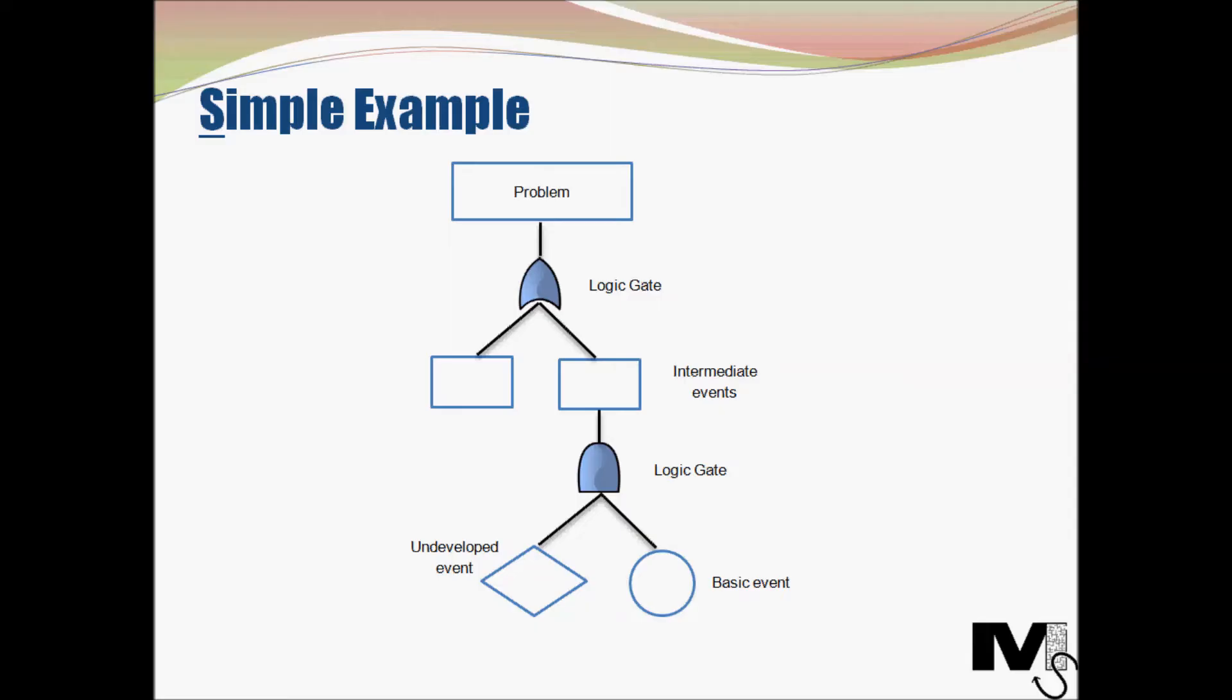Because there is the existence of intermediate events here, we are essentially breaking the event down into its basic components. We are breaking the problem down to its roots. So at the bottom here we have another logic gate and another couple of event types.